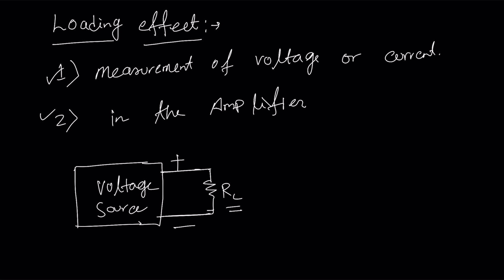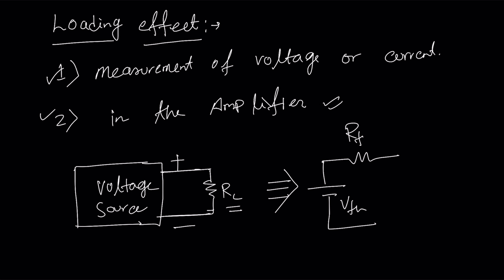First, I will show you the second scenario in the amplifier. Whenever you make a voltage source or current source, you want to use it for some experiment. We know that any linear bilateral network can be converted into a voltage source with a series resistance, as per Thevenin's theorem. That means we can simply convert the circuit with Vth and Rth, and there will be a load resistance.